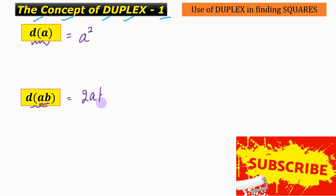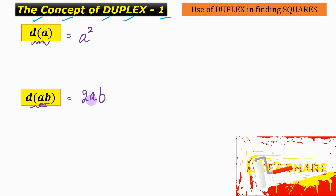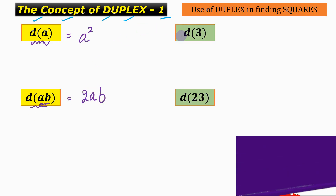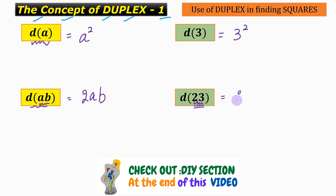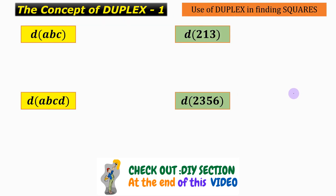The duplex of the number 3 will be defined as 3 squared. The duplex of the number 23, being a two-digit number, is defined as 2 into 2 into 3, which comes out to be 12. Now let us see the duplex of three-digit numbers and four-digit numbers.